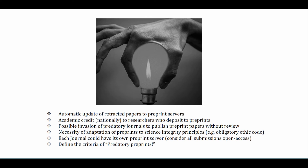Eighth is the possible invasion of predatory journals toward preprint websites in order to publish preprint papers without review — this is a future possibility. Ninth is the necessity of adapting preprints to scientific integrity principles. Although some preprints have a commitment to integrity principles, the majority do not. In the future, there should be an obligation — for example — to include an ethical code in papers published on each preprint.